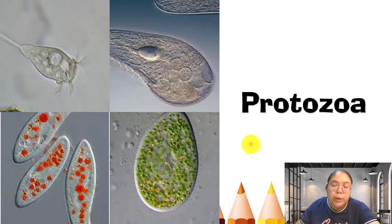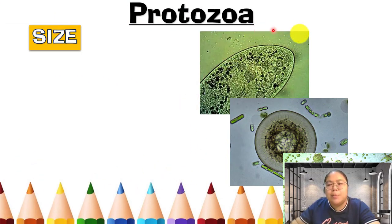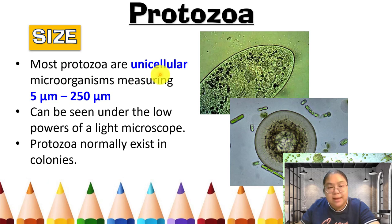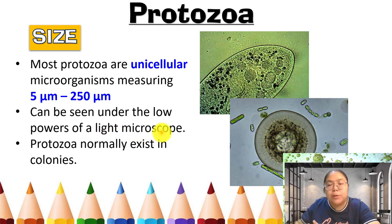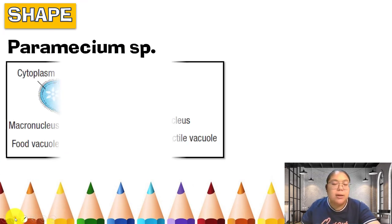Now we go to the third microorganism — protozoa. You can see the shape looks almost like a slipper. Protozoa are unicellular and are among the largest microorganisms in this group, but we still cannot see them with the naked eye. Here are some examples. Most protozoa are unicellular microorganisms measuring from 5 micrometres to 250 micrometres, visible under low-power light microscopy. Protozoa normally exist in colonies.